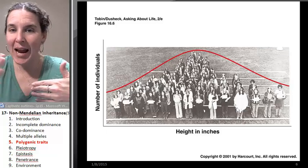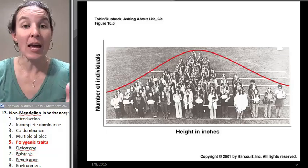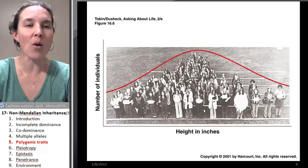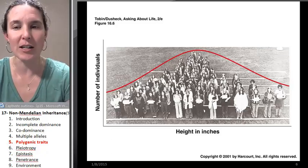But if we had this range, kind of a bell curve example, then we would be more likely to think, oh, I bet there's multiple genes that are contributing to this.